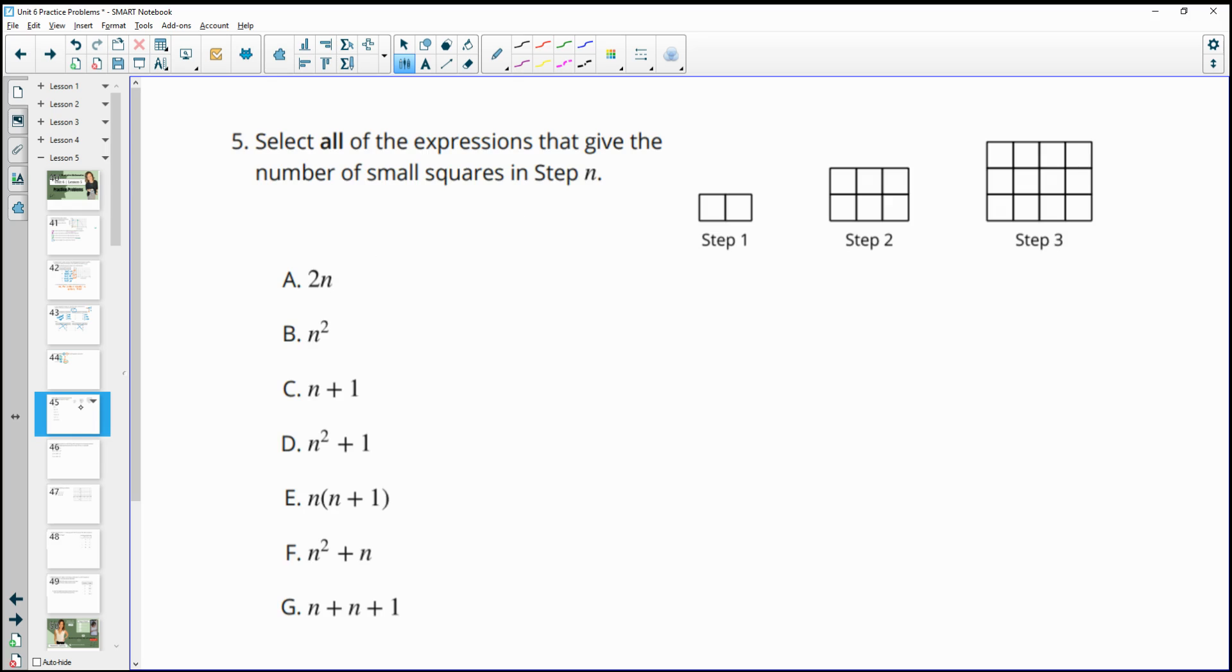Number five, select all of the expressions that give the number of small squares in step n. To figure out if this works, you can actually just plug in the step numbers. This is n equals 1, n equals 2, n equals 3, and see if they work. If they don't work, it's wrong. So 2 times 1 gives us 2 for this one. That's good. And then 2 times 2 gives us 4 squares in step 2. And that's not true.